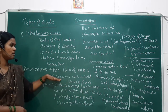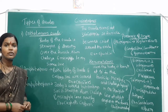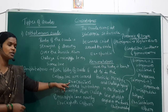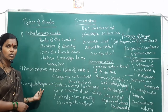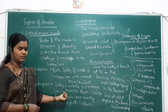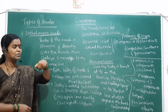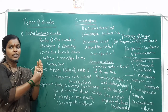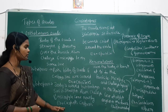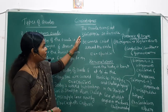The next type is the amphitropous ovule, where both the body of the ovule and the embryo sac are curved, while the hilum, chalaza, and micropyle come near to the embryo sac. Then there is the campylotropous ovule, where the funicle and chalaza are nearby to the embryo sac. Examples include Capsella and Caparis.